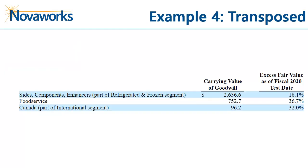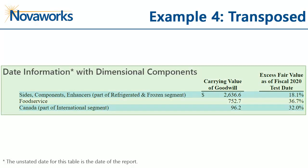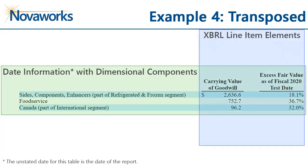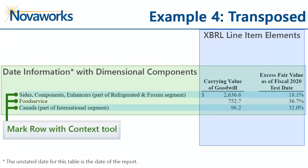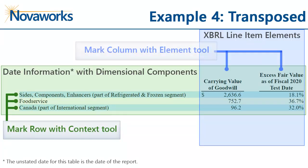The final type of table we can tag with these tools is a transpose table — a table where the context information is contained in the rows and the element information is contained in the columns. For this type of table, we would use the MarkRowWithContext tool and the MarkColumnWithElement tool.